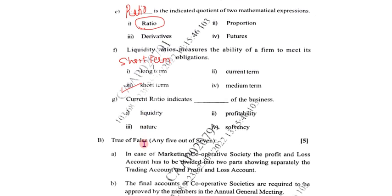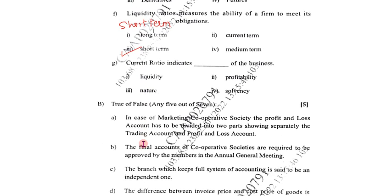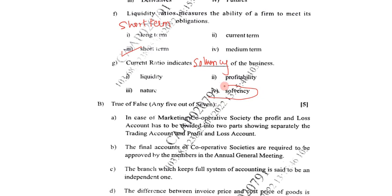Next: Current ratio indicates the dash of the business. Options are liquidity, profitability, nature, or solvency. Current ratio indicates the solvency of the business. Option D — solvency — is the correct answer.